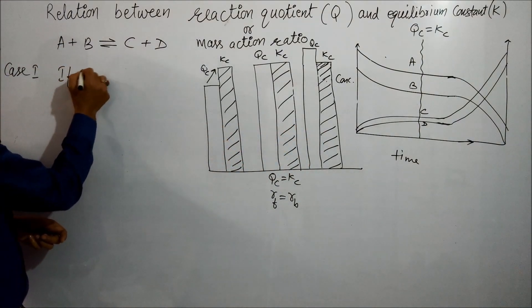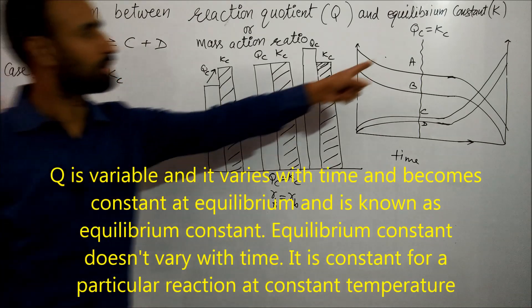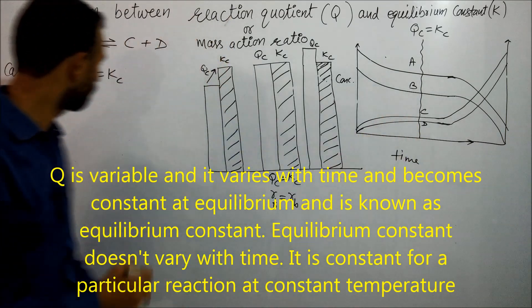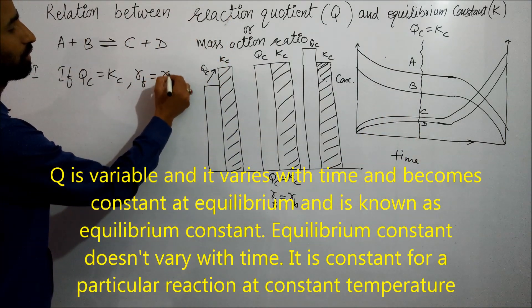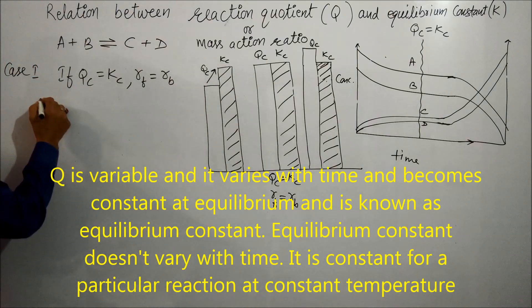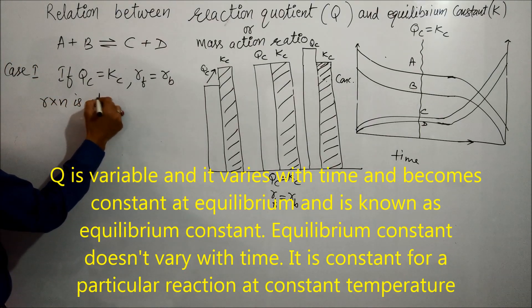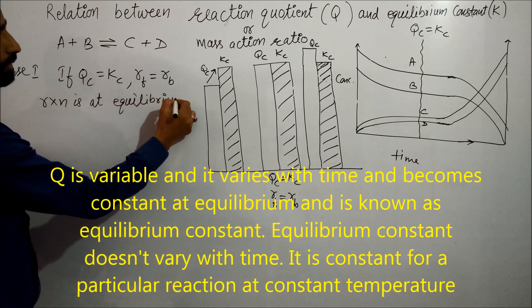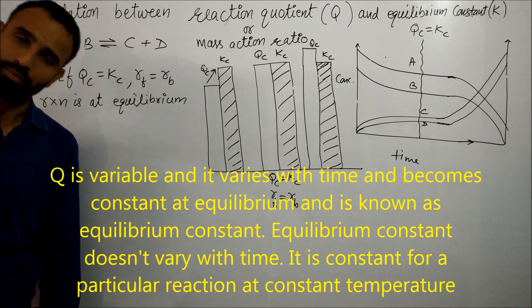Case 1: If QC is equal to KC, the rate of forward reaction is equal to the rate of backward reaction. So the reaction is already at equilibrium.